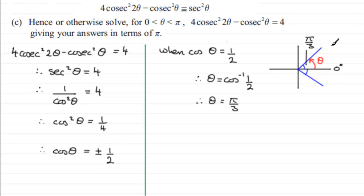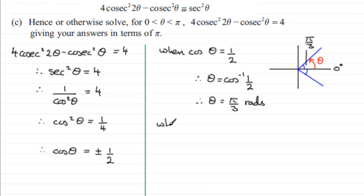So θ equals π/3 radians — the equivalent of 60 degrees. Now we move on to the second case: when cos(θ) equals minus a half.